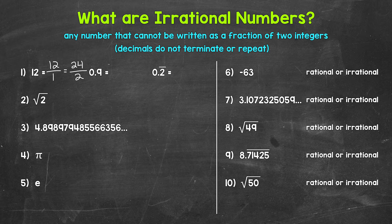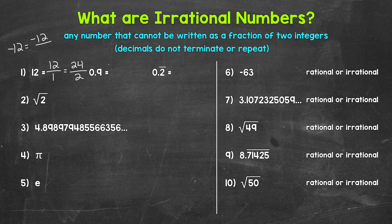And the same thing goes for negative 12 — it doesn't matter if we have a negative, this is still rational. We can write this as negative 12 over 1 and so on, so negative 12 is also rational.